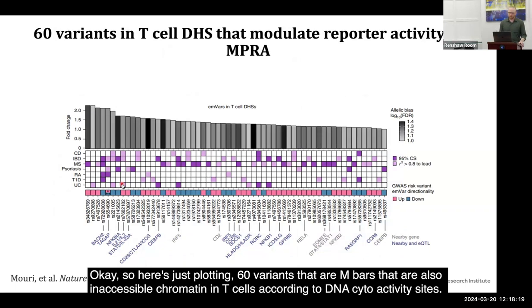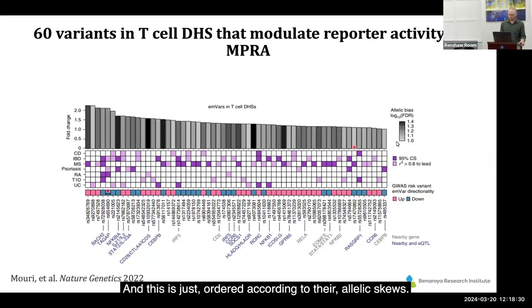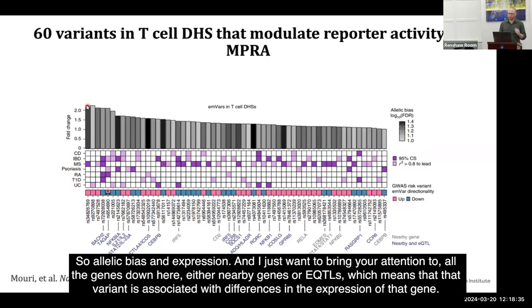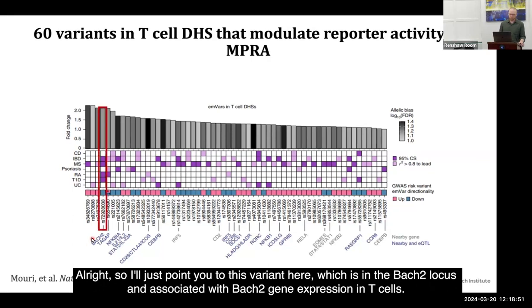We believe the assay is doing a really good job at finding likely causal variants. Even if the PICS fine mapping isn't perfect, we're still identifying likely causal variants. Here I'm plotting 60 EMVARs that are also in accessible chromatin in T cells according to DNase-1 hypersensitivity sites, ordered according to their allelic skew — allelic bias in expression. I want to bring your attention to all the genes listed here — either nearby genes or eQTLs — meaning that variant is associated with differences in expression of that gene. I'll point to this variant in the Bach2 locus, associated with Bach2 gene expression in T cells.